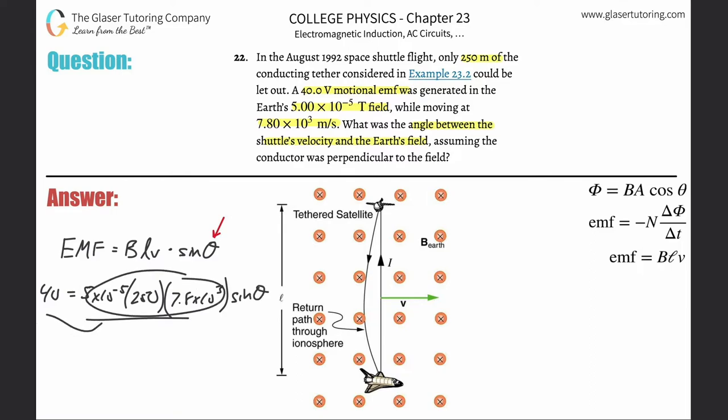So multiply this, then divide it on out into the 40. So it's basically going to be 40 divided by parenthesis 5 times 10 to the minus fifth times 250 times then 7.8 times 10 to the third. And this works out to be now 0.410 is equal to sine of theta.